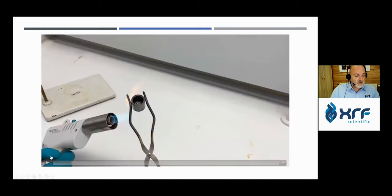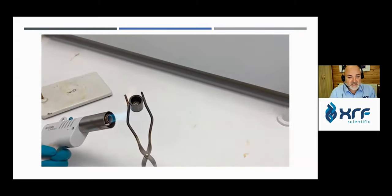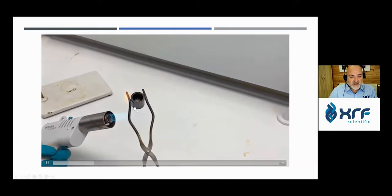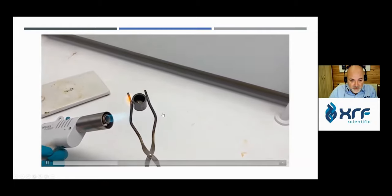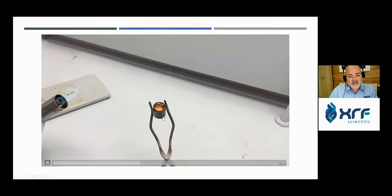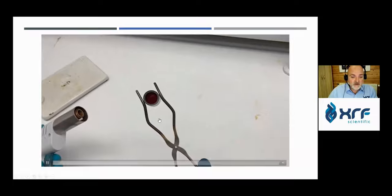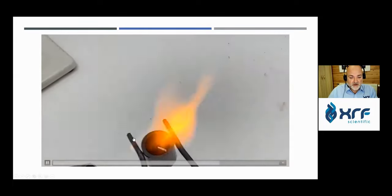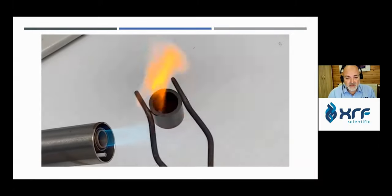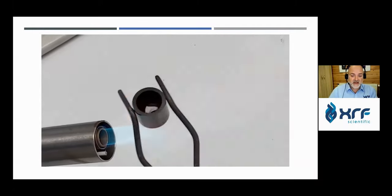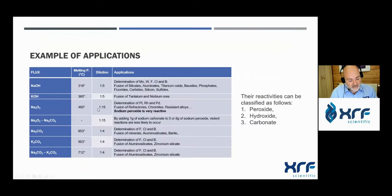Here is a short video showing how peroxide fusion looks when done manually with a hand burner. You need to mix the sodium peroxide with the sample, and the reaction starts within a couple of seconds. It is quite quick — an exothermic reaction — and you need to continue mixing with tongs and heating to achieve complete dissolution of the sample in the flux. When it's completely dissolved, you can continue to the next steps. Of course, doing this by hand is more complicated, especially when you have a high throughput.